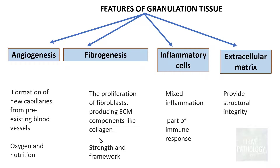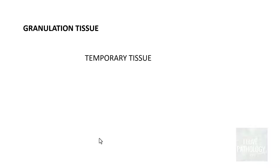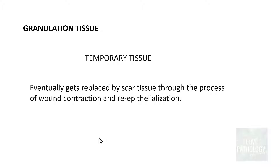The last feature is the extracellular matrix itself, which provides structural integrity. All these components are part of the formation of granulation tissue. You should also know that it is a temporary tissue, because it eventually gets replaced by scar tissue through the process of wound contraction and re-epithelialization.